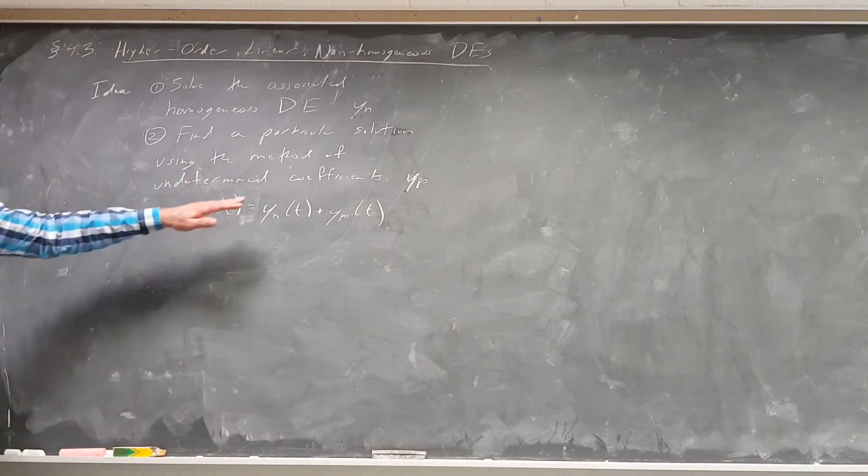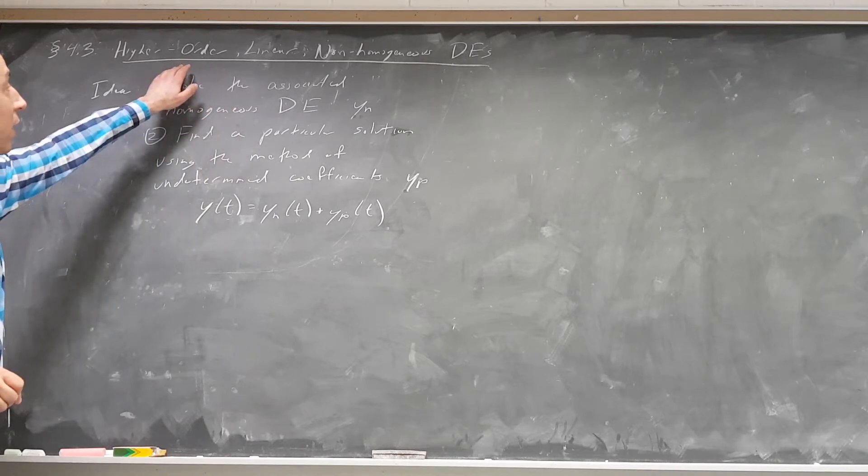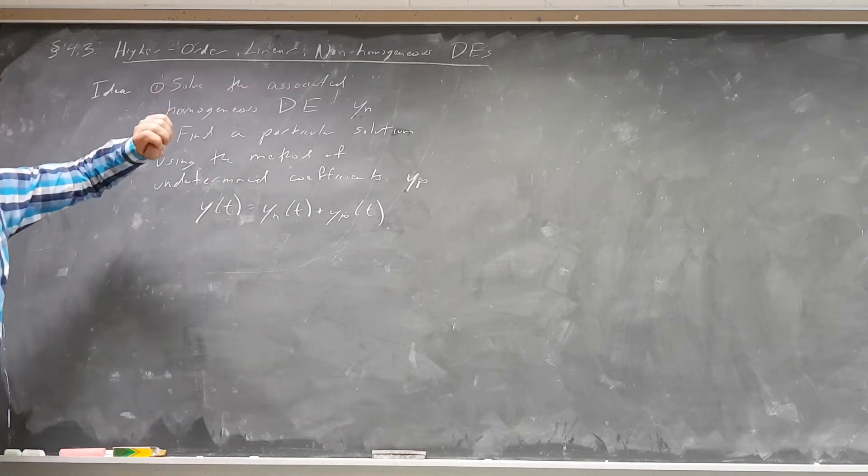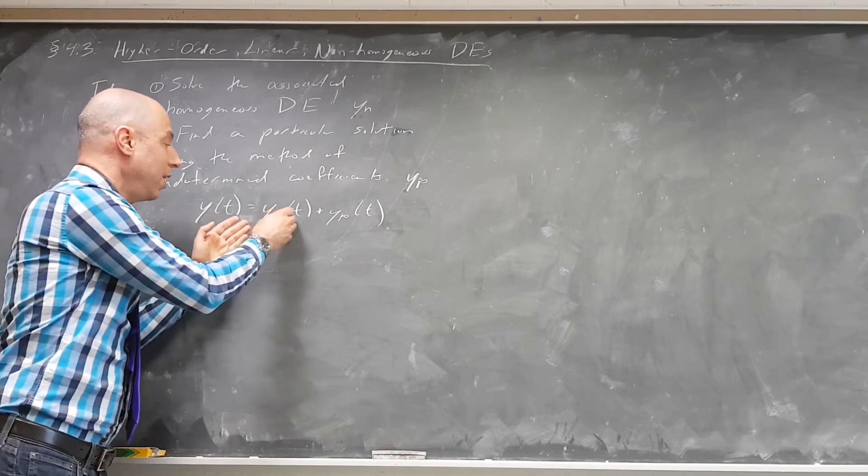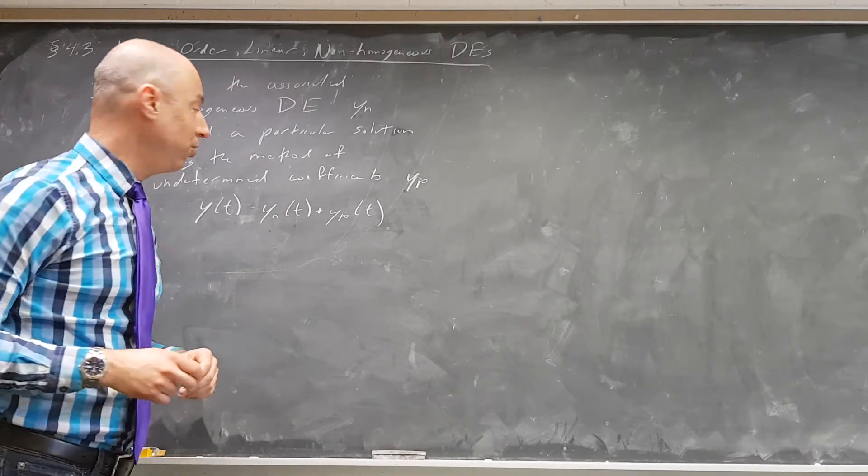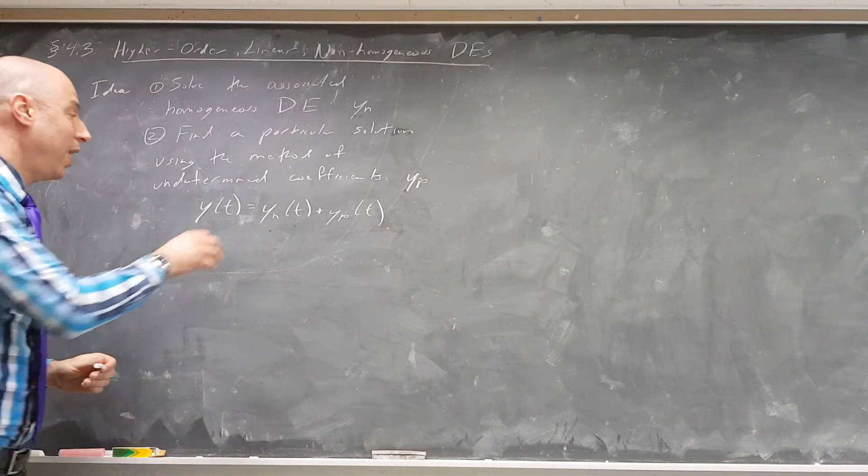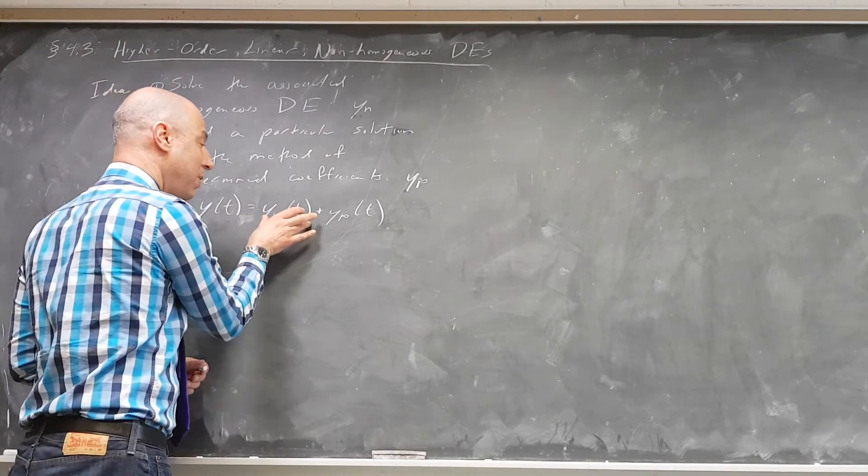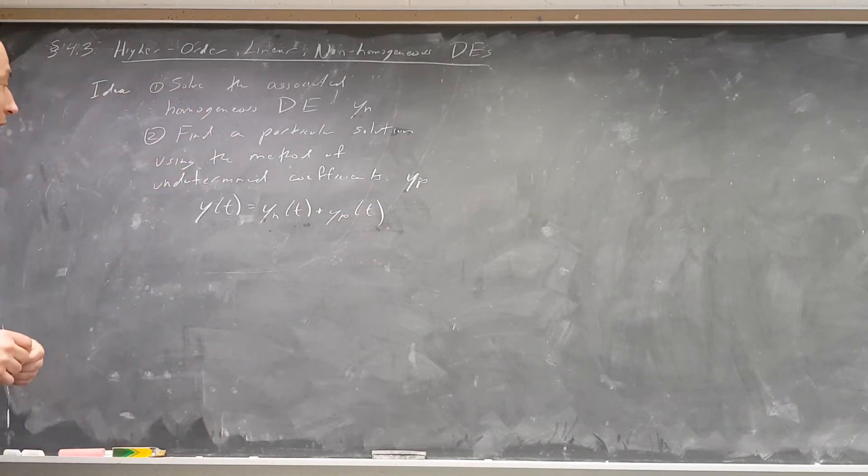Now we saw last time, if we have an n-th degree linear homogeneous differential equation with constant coefficients, its general set of solutions is going to be parametrized by n parameters. So we'll have something parametrized by n parameters here. So here we will add on to a particular solution. So let's take a look at a couple problems.